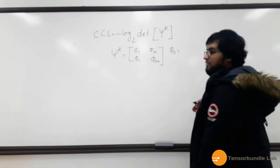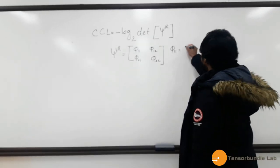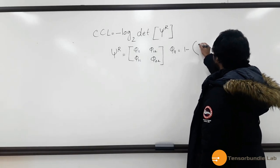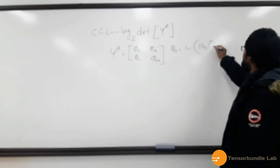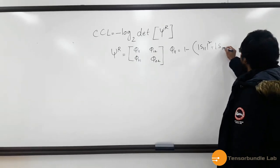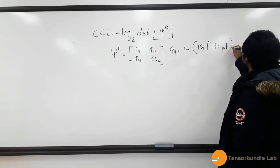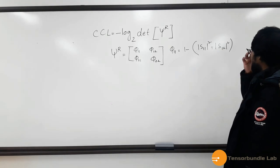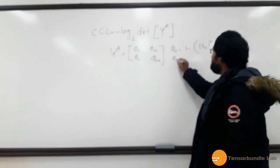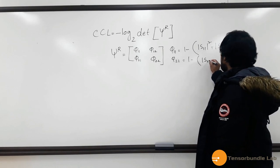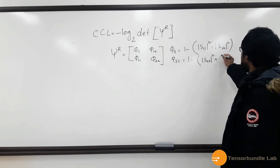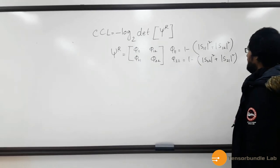ρ11 can be described in terms of S-parameter, 1 minus modulus of S11 whole squared plus modulus of S12 whole squared. And ρ22 can be defined as 1 minus S22 whole squared plus S21 whole squared.